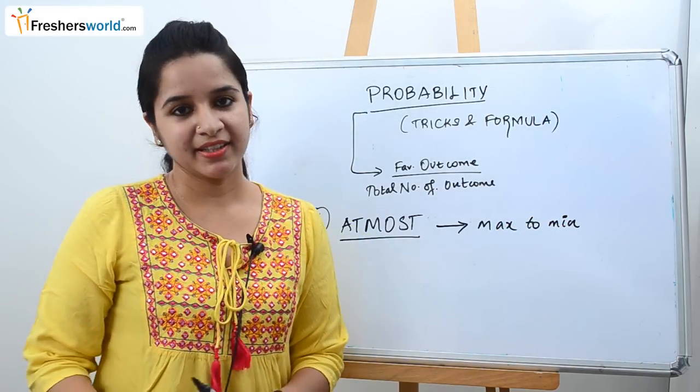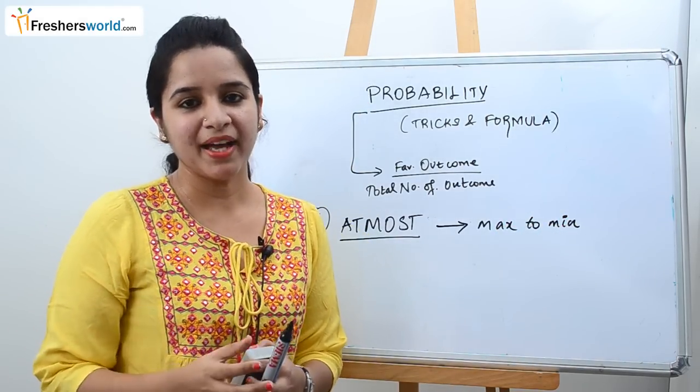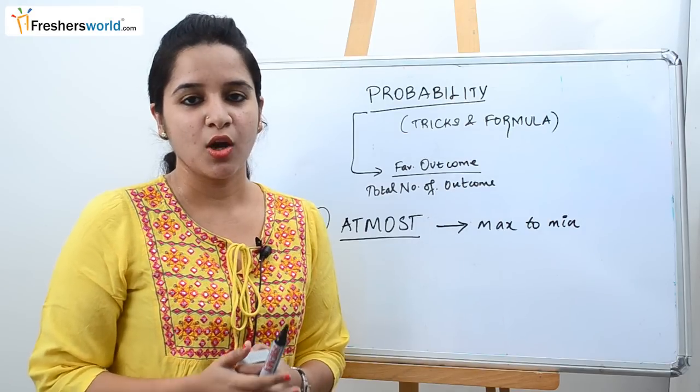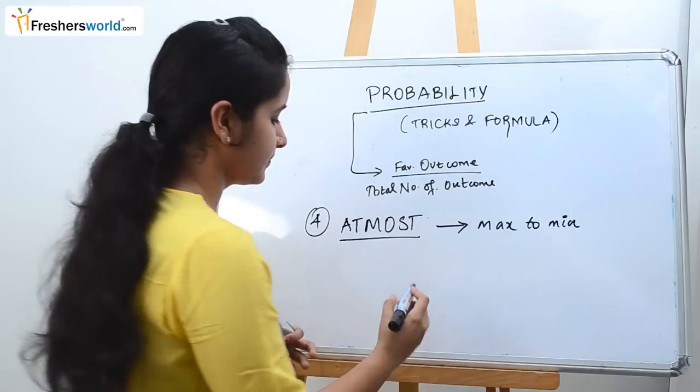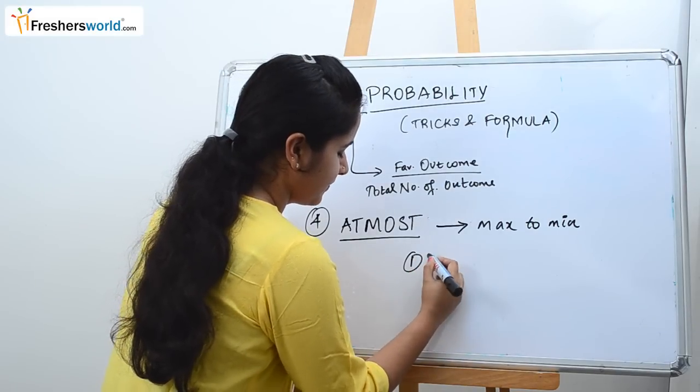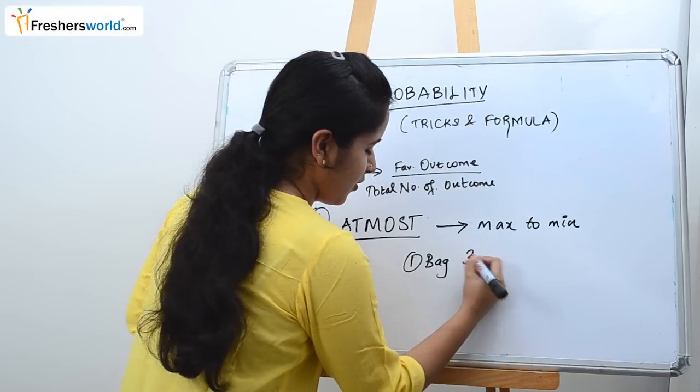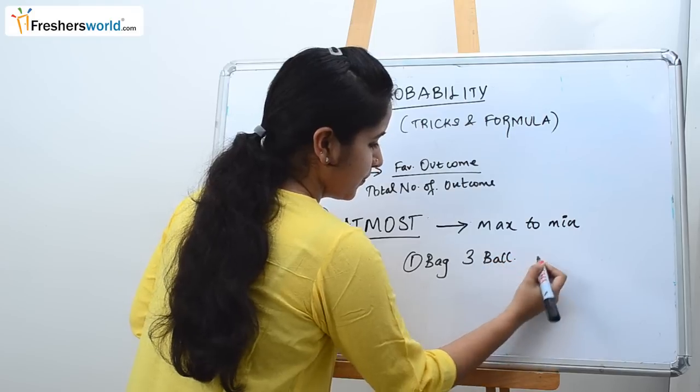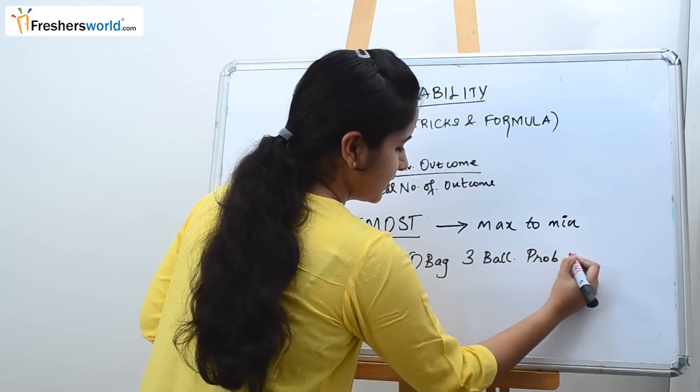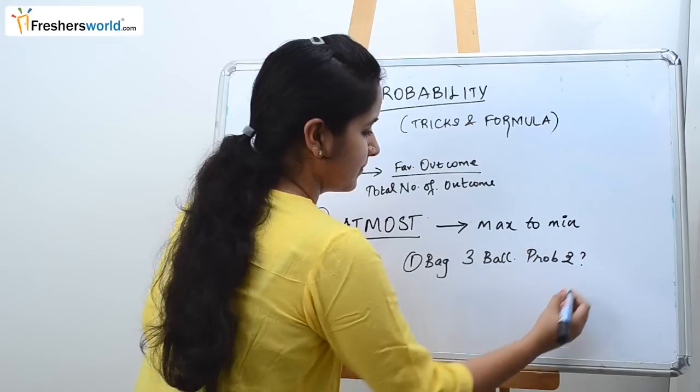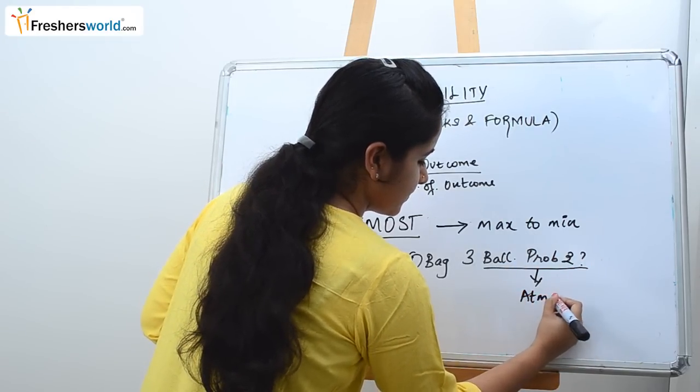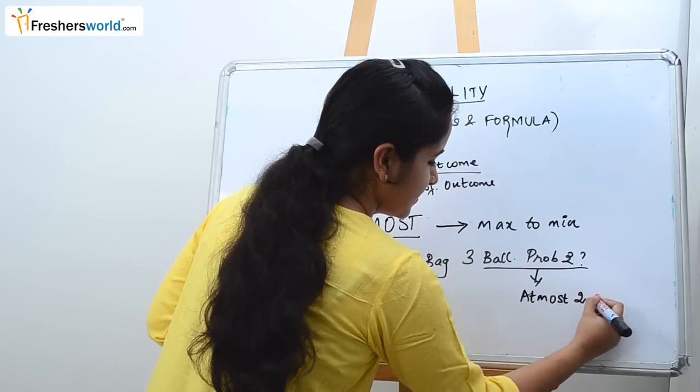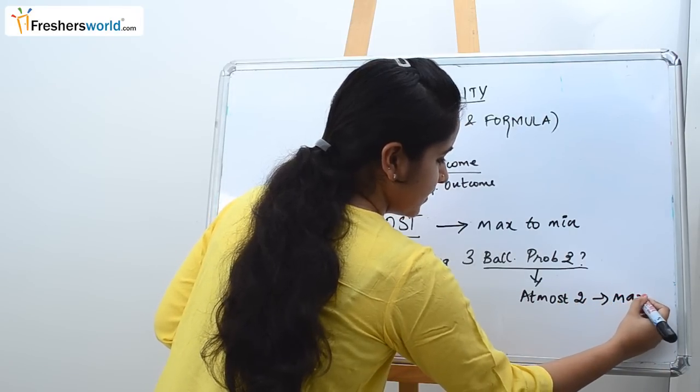Let's take an example. One bag contains three blue balls out of which utmost you need to take two balls. So one bag has three balls out of which probability of two balls is your question. So utmost two balls which means maximum is two balls.